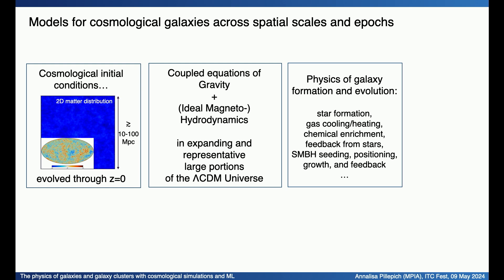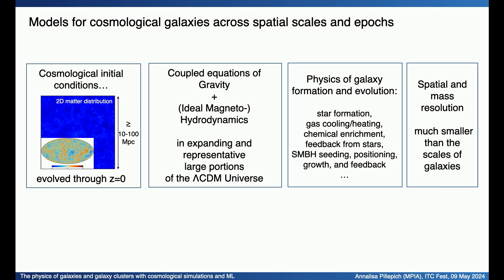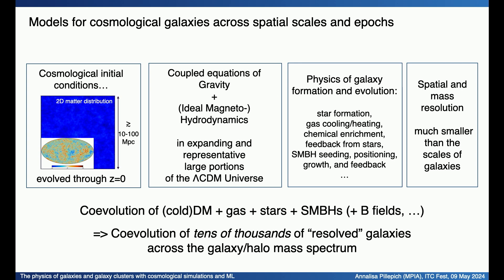We have talked about star formation, feedback from star formation, stellar feedback, the seeding, growth, and feedback from supermassive black holes that are fundamental to reproduce realistic observed massive galaxies. All this has to be done at spatial and mass resolutions much smaller than the scales of galaxies. So we are talking about models that, at minimum, return the co-evolution of cold dark matter, gas, stars, supermassive black holes, in some cases magnetic fields, and therefore the co-evolution of tens of thousands of well-resolved galaxies across large mass ranges and spatial scales.